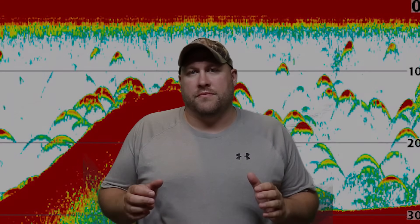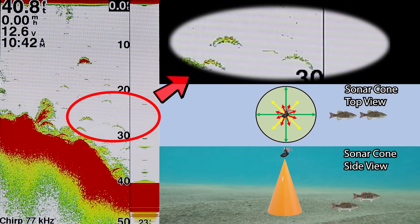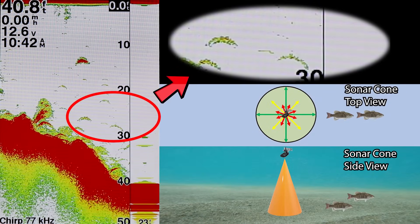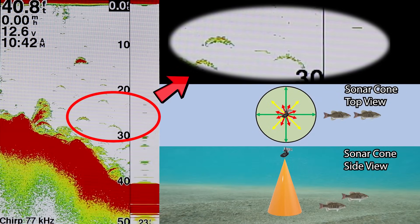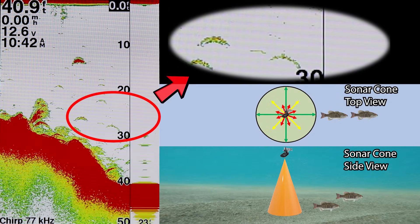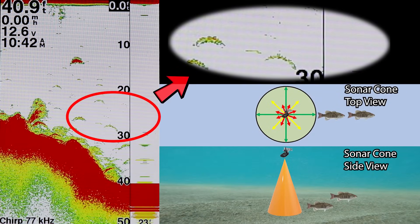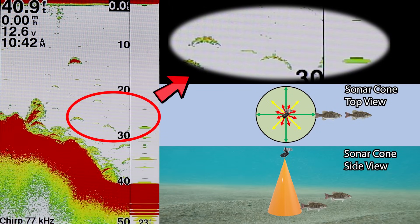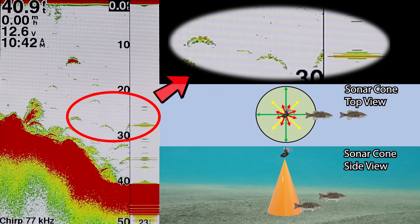Now we're going to put everything together using actual footage from the Garmin Striker 4 fish finder. In this short clip, you'll see two fish make their way through the transducer cone and how that correlates to what we see on our fish finder screen.